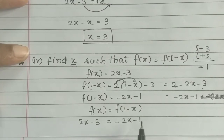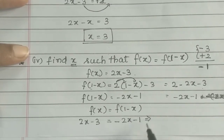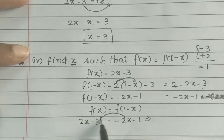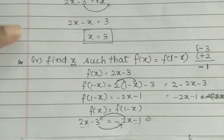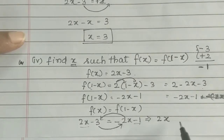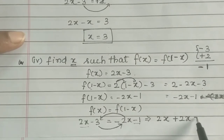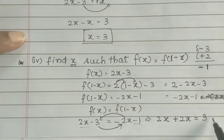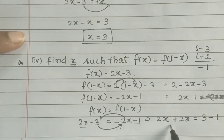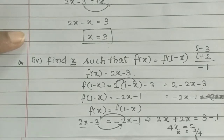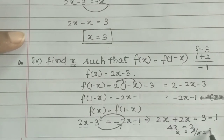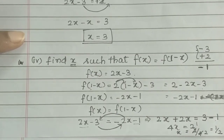From 2x - 3 = -2x - 1, we move terms: bring -2x to the left-hand side and -3 to the right-hand side, with signs changing. So 2x + 2x = -1 + 3, giving 4x = 2. Therefore x = 2/4 = 1/2. So x = 1/2. That's all. Thank you.